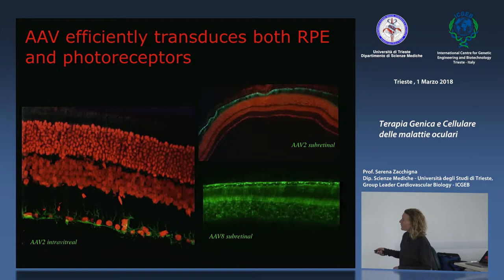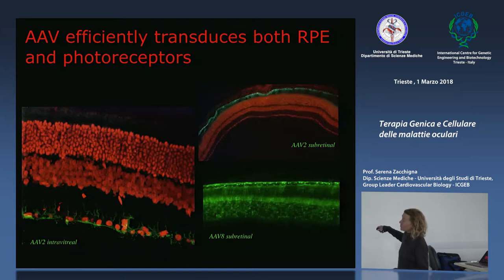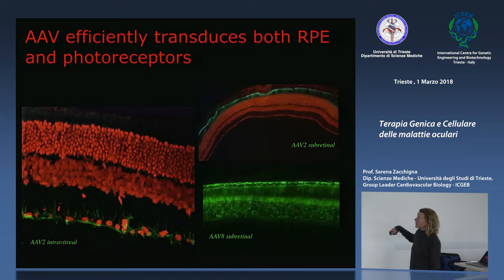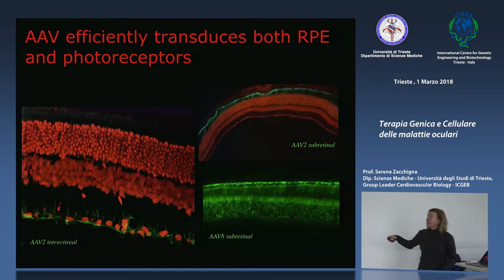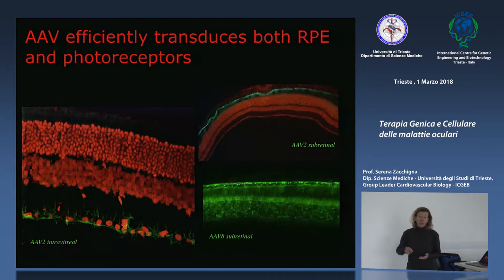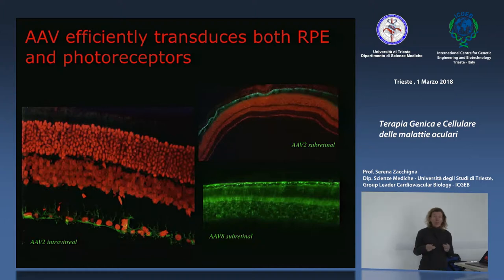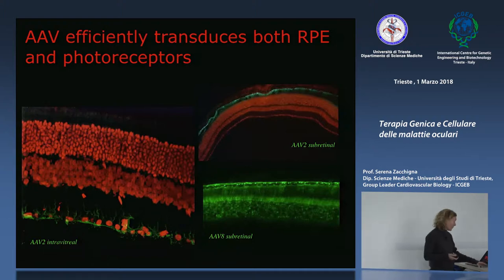Viceversa, iniettando per via sottoretinica si riesce a targettare i fotorecettori, oppure l'epitelio pigmentato retinico (EPR), lo strato di cellule sopra la retina che fagocita la porzione superiore dei fotorecettori contenente i dischi già utilizzati, in cui il pigmento visivo è stato già convertito dalla luce e non è più riutilizzabile.